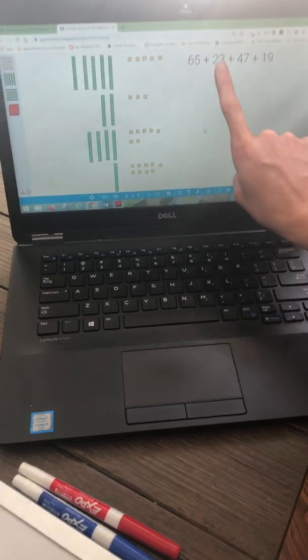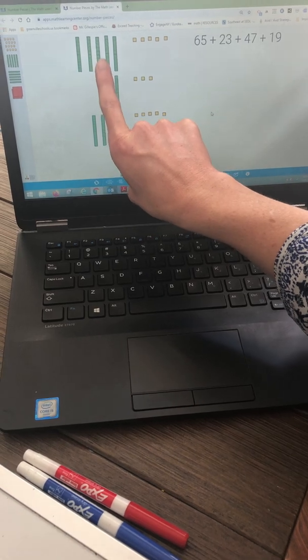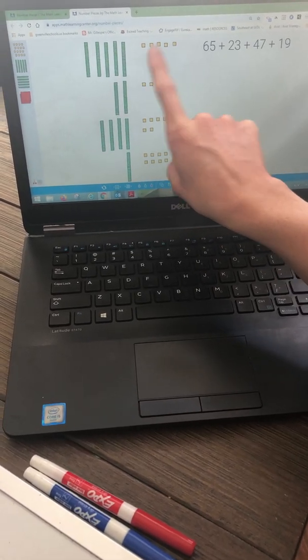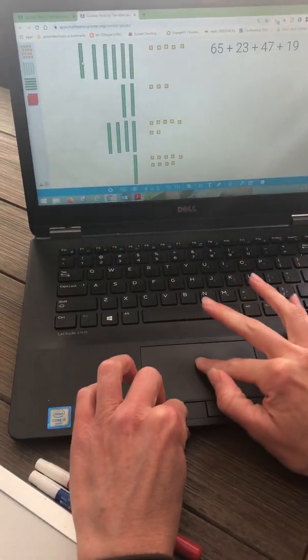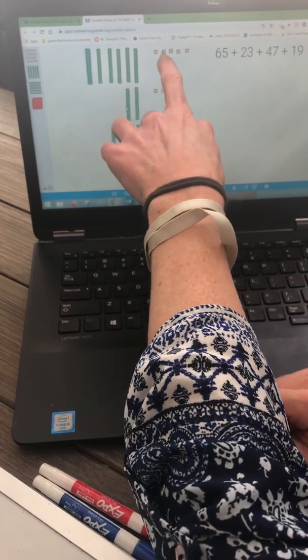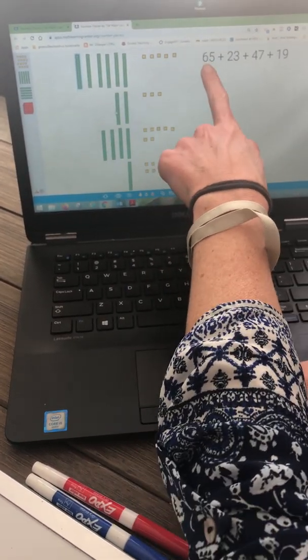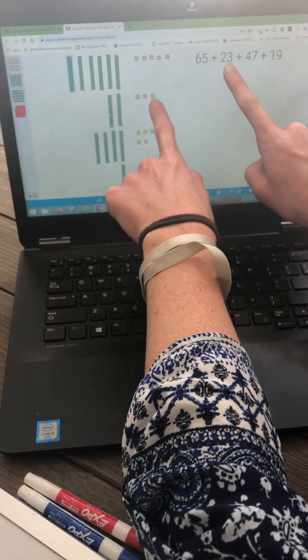I've represented each of my addends with my base 10 blocks. My rods represent my tens and my single units represent my ones. So, 65 was represented as 10, 20, 30, 40, 50, 60, 61, 62, 63, 64, 65. And 23 was represented as 10, 20, 21, 22, 23.